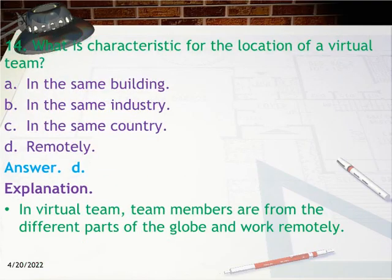Question 14: What is characteristic for the location of a virtual team? A. In the same building, B. In the same industry, C. In the same country, D. Remotely. Answer: D. Remotely. Explanation: In a virtual team, team members are from different parts of the globe and work remotely.